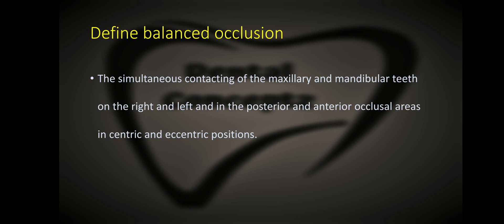What is balanced occlusion? Balanced occlusion is the simultaneous contacting of the maxillary and mandibular teeth on the right and left and in the posterior and anterior occlusal areas in centric and eccentric positions.